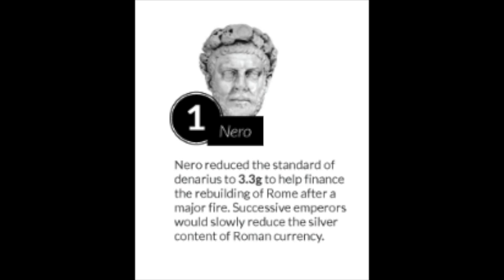Looking at five key emperors: Emperor Nero reduced the standard of the denarius from 3.3 grams to help finance the rebuilding of Rome after a major fire. Successive emperors would slowly reduce the silver content further — it's a slippery slope. Once one leader does it, it becomes easier for the next and the next, until it's not worth anything anymore. When someone assaults a currency for the so-called greater good, you need to stop them right then, because this is how empires crumble and civilizations are destroyed.